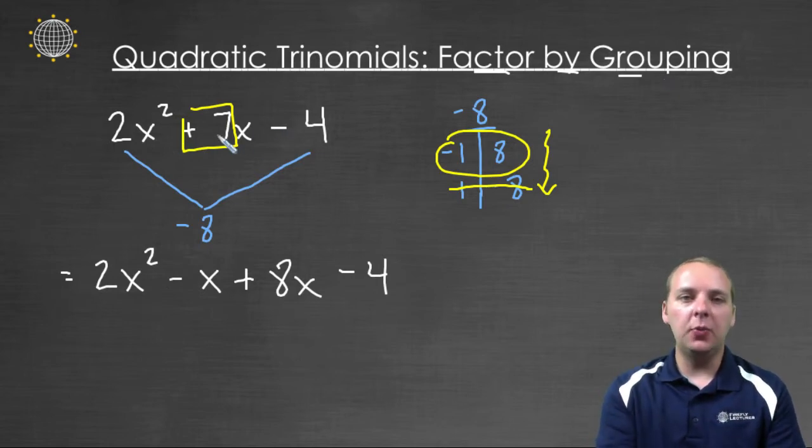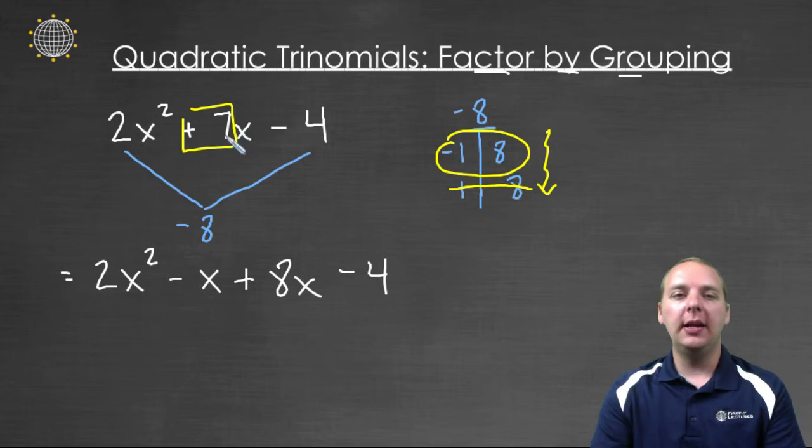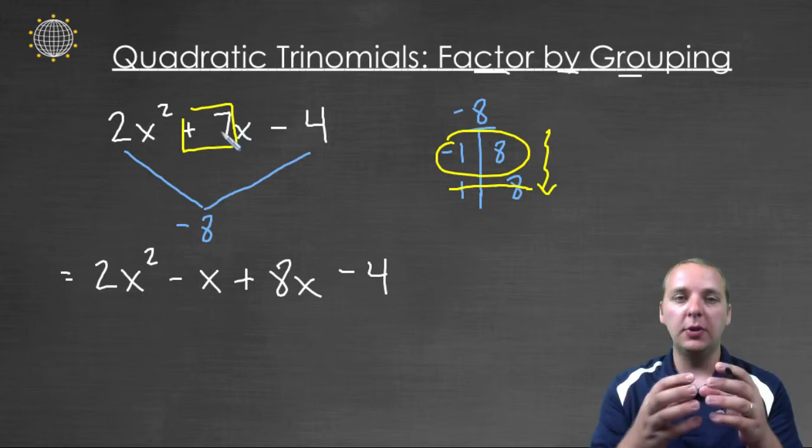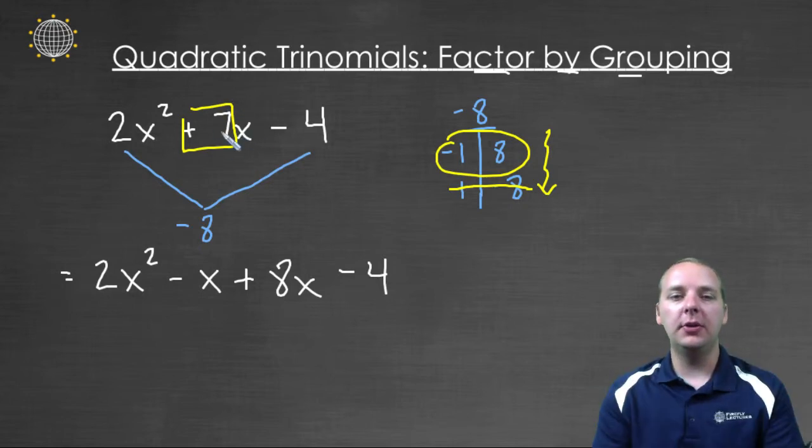But now it's clear why this still works, is because we're breaking this middle part, this middle term up into two separate terms, giving us a total of one, two, three, four terms.